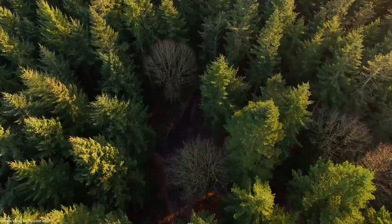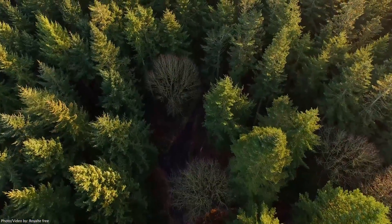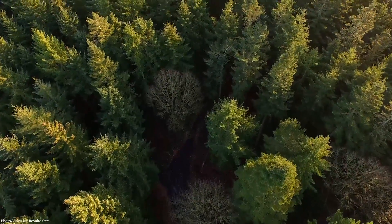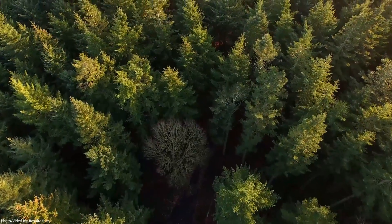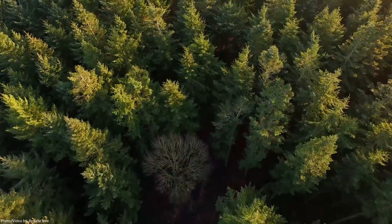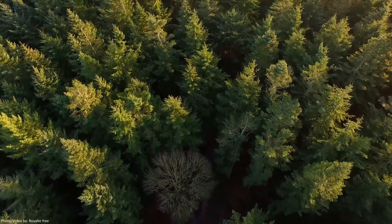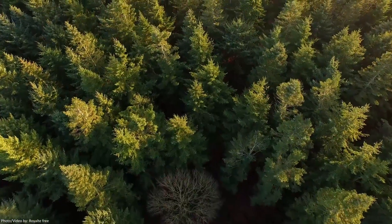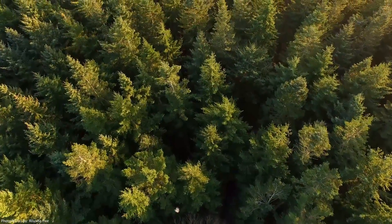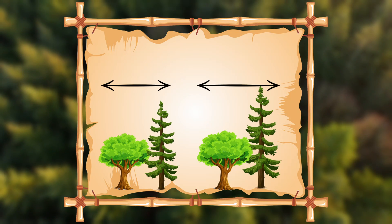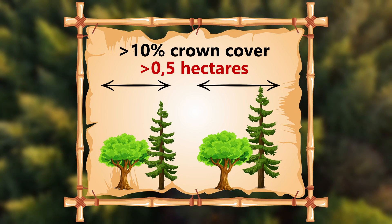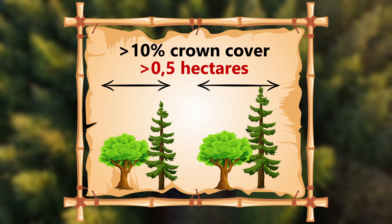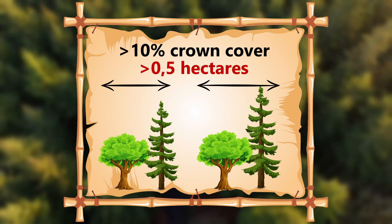A forest can broadly be described as an area that has a large number of trees. As a general description it works, however the Food and Agriculture Organization tried to put a number to it and defines a forest as an area with ground cover of more than 10% and a size of at least 0.5 hectares.